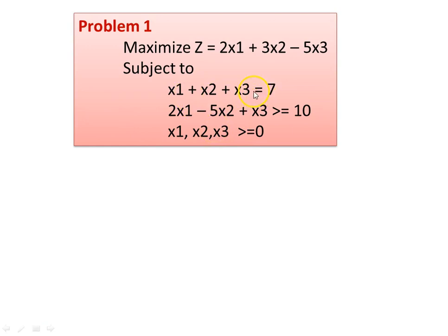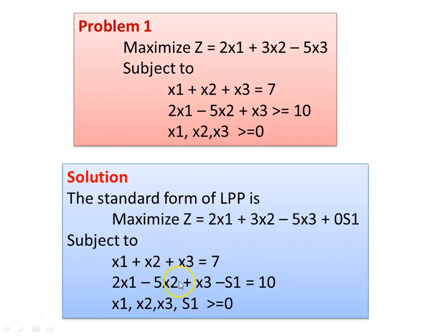Look at the constraints. The first constraint has the equal symbol and the second constraint has the greater than or equal to symbol. In our regular procedure, we have to convert the constraint inequalities into equalities. So in the second constraint, we subtract the surplus variable s1. The standard form: first constraint remains x1 plus x2 plus x3 equal to 7; second constraint becomes 2x1 minus 5x2 plus x3 minus s1 equal to 10. x1, x2, x3, and s1 are all greater than or equal to 0. The objective function is z equal to 2x1 plus 3x2 minus 5x3 plus 0·s1.